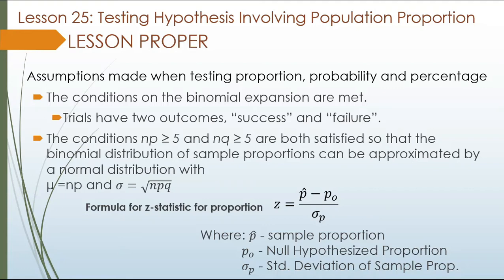Therefore, we can compute the z-statistic of a proportion using the formula: z is equal to p-hat minus p-sub-o divided by the standard deviation of p. Where p-hat is our sample proportion, p-sub-o is the null hypothesized proportion, and sigma-sub-p is the standard deviation of the sample proportion.